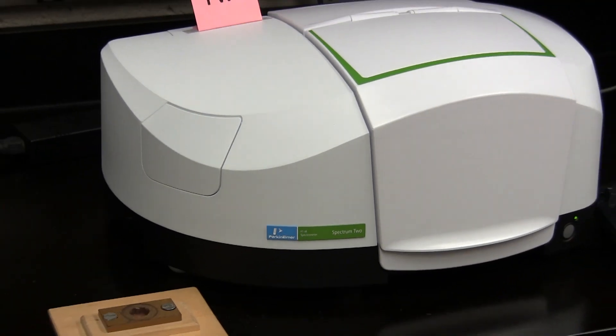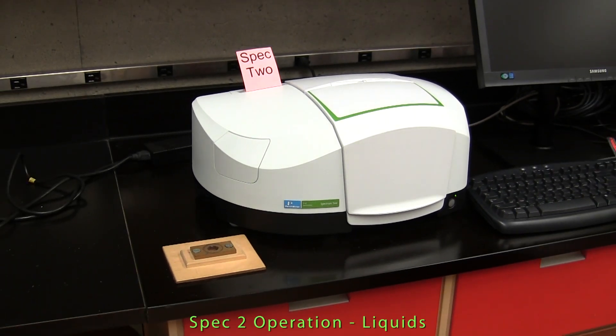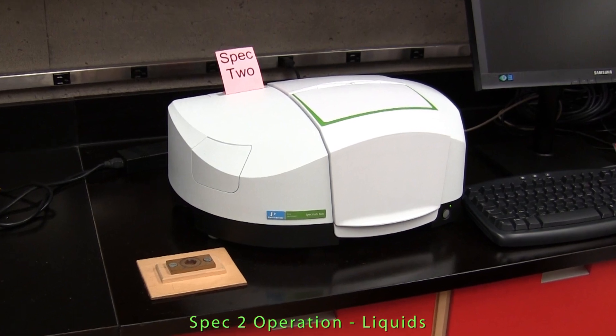Here we see SPEC 2 which you will use only to obtain IR spectra of liquids. Although we could also utilize a solid sampling method with SPEC 2, it will be used only for collection of liquid spectra.